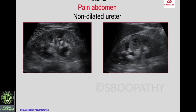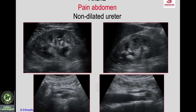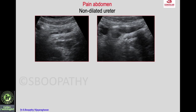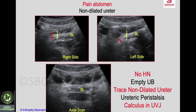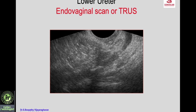Here a patient presents with pain abdomen and anuria. Both kidneys are normal and the mid ureters are not dilated, but by following peristalsis you come down and see the bladder is empty. Tracing the non-dilated ureter, you see calculi at the ureterovesical junction on both sides, resulting in anuria — right side and left side. On transverse scan you see the empty bladder and both calculi at the ureterovesical junction. Ultrasound can pick up calculi in spite of anuria, empty bladder, and non-dilated ureter. Endovaginal scan or TRUS can be used to look for calculi in the distal ureter with an empty bladder.